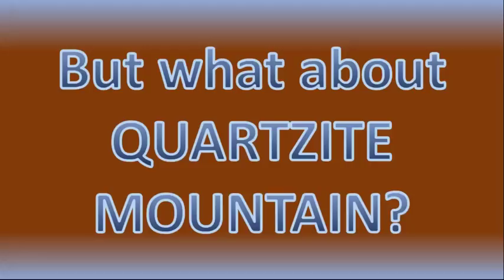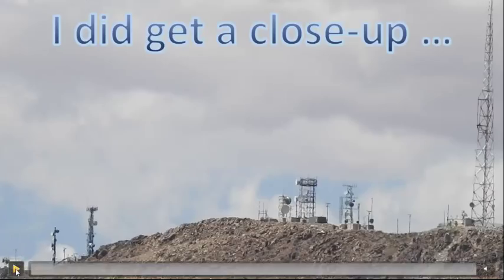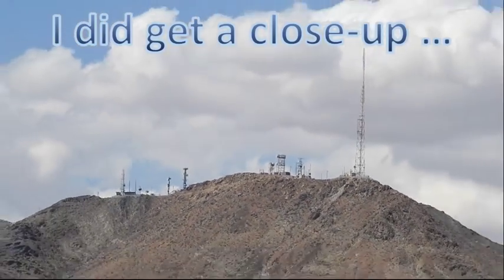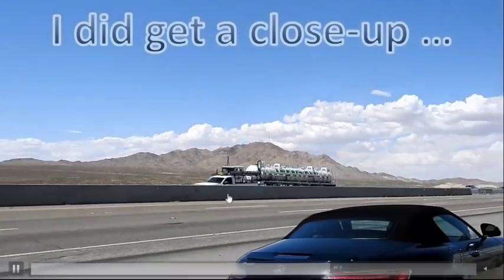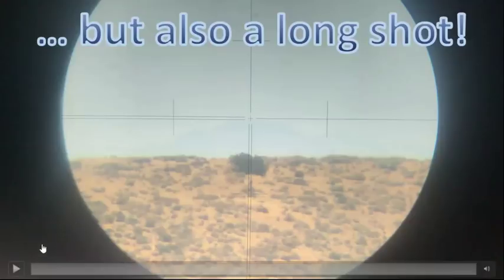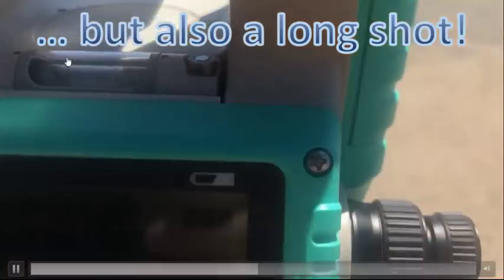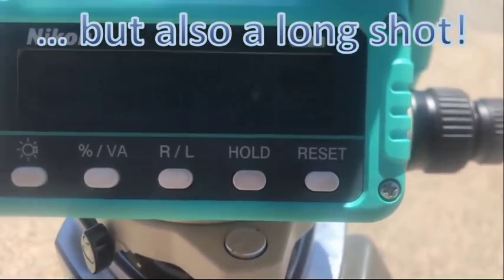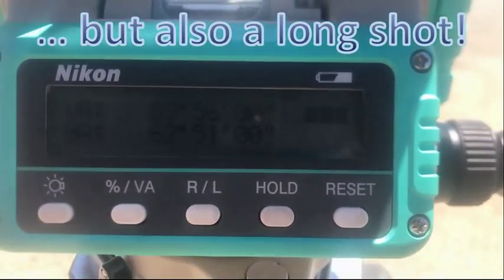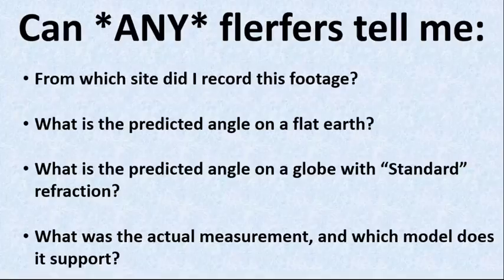But what about Quartzite Mountain, given that was Jay Toland's original target? I did actually get a chance to get a close-up of it while I was driving to Vegas. So there it is. But I also got a longer shot. Let's have a look here. That is Mount Quartzite there. Very difficult to see. But we have 89, 56, 0, 62, 51, 0. So a question for all the fluffers. Can you figure out which site that I recorded this footage from out of the five given? Can you work out the predicted angle on a flat earth? Can you work out the predicted angle on a globe with standard refraction? And tell me what my actual measurement was and which model it supports. If you can do that, you'll get a massive shout-out on my next video.